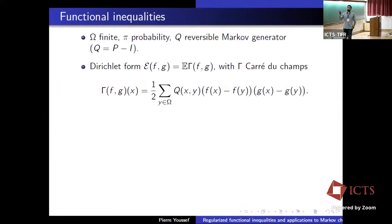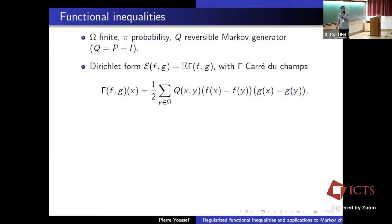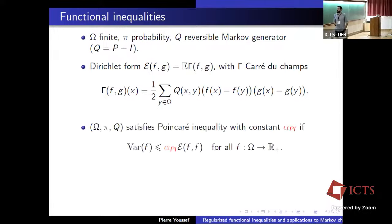So first the setting. The state space is finite, but we are in high dimension, so the size of the state space is very large and we want to know dependencies on this size. Pi is a probability measure and Q is a reversible Markov generator with respect to this priority measure pi. An object that will play a big role in the talk is the Dirichlet form, which is this bilinear form — the expectation of the carré du champ operator, measuring the local variation around a point by averaging over all neighbors.